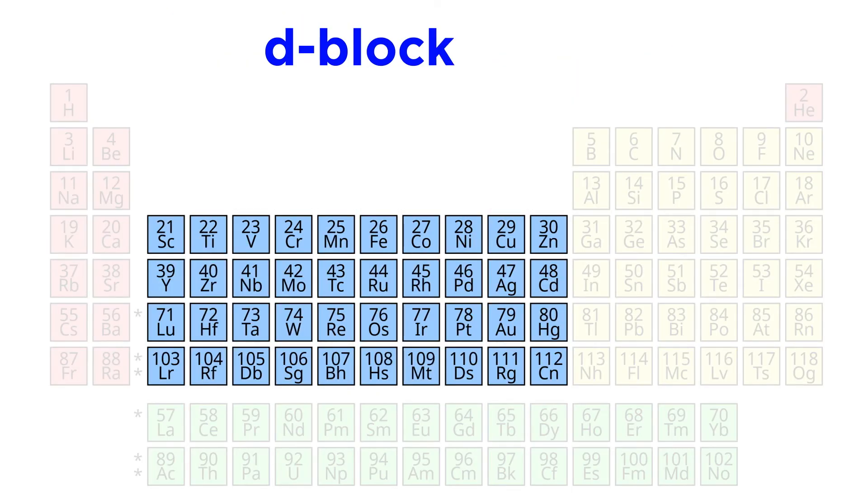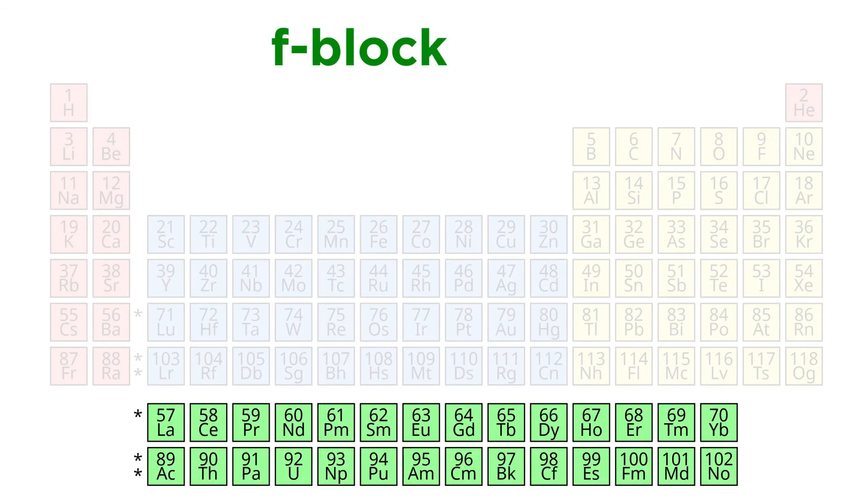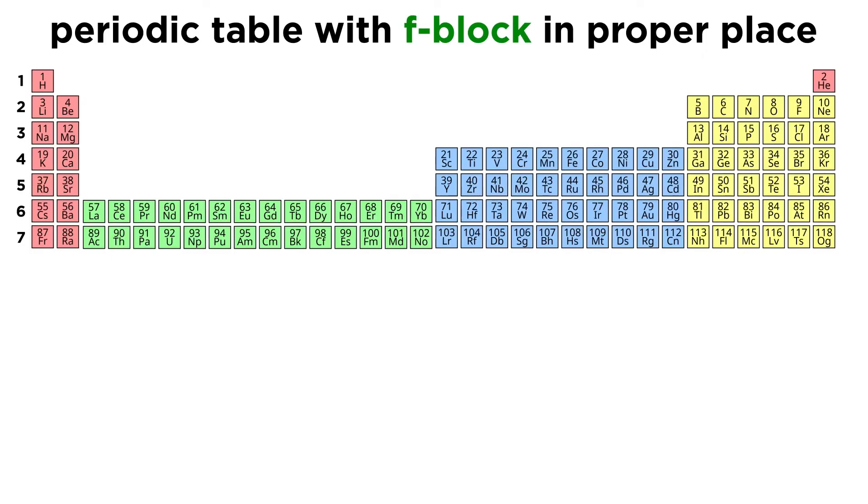With the D block covered, there is just one section of the periodic table left, and that's the F block. This is always found hovering mysteriously below the rest of the table, and this is for very good reason. If the periodic table were to be displayed intact, the F block would occur immediately after the S block in periods 6 and 7, so that would look like this, with the S, F, D, and P blocks in this order, so that there is no interruption in the increase of atomic number when moving left to right.